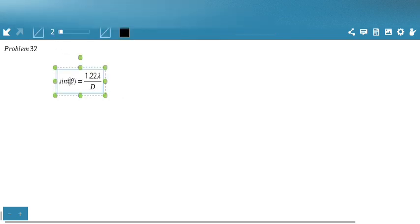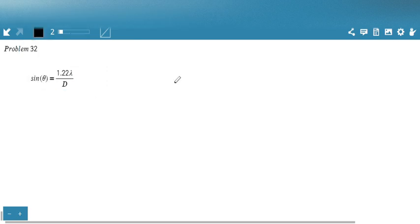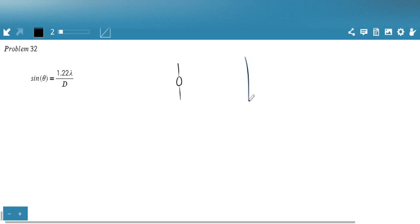So this equation describes a first order diffraction minimum going through an aperture with a diameter D. So we have some diameter D here. So let's pretend light is going through this hole.